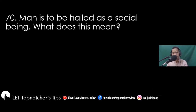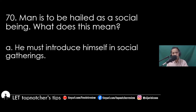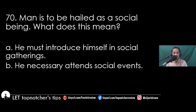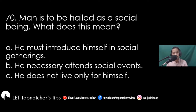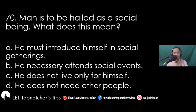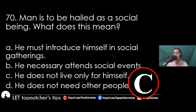Item 70: 'Man is to be hailed as a social being.' What does this mean? A) He must introduce himself in social gatherings, B) he necessarily attends social events, C) he does not live only for himself, D) he does not need other people. The best answer is letter C, he does not live only for himself.